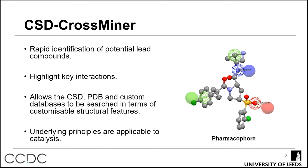CSD CrossMiner is used to aid the development of pharmaceutical compounds by highlighting key structural features within your molecule of interest — for example, hydrogen bond acceptors, hydrogen bond donors, and ring planar systems. You define these features on your 3D structure and then search the entire Cambridge Structural Database for similar compounds. This is essentially structure-based design to find similar compounds, and the aim is to apply these underlying principles to the design of ligands for catalysis.